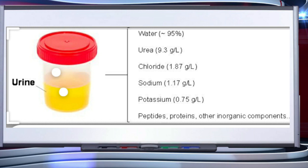The urine formed is a light yellow colored, watery fluid which is slightly acidic — about pH 6 — and has a characteristic odor. On an average, 25 to 30 grams of urea is excreted per day.